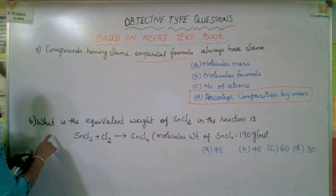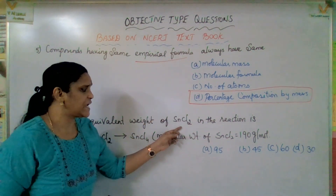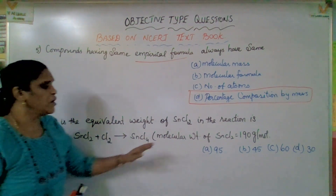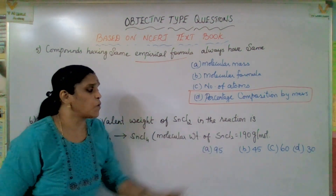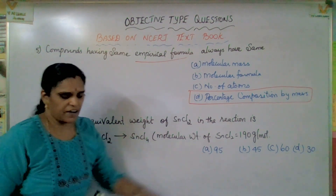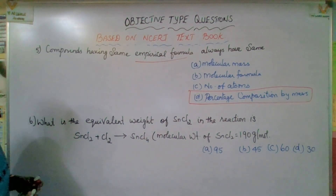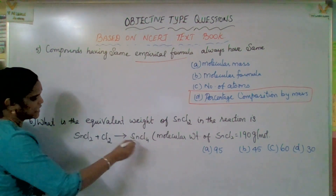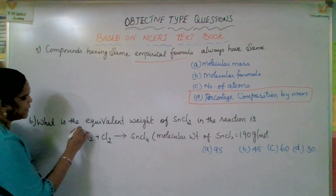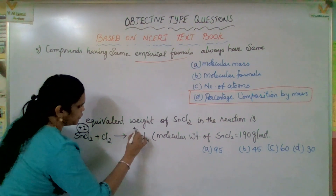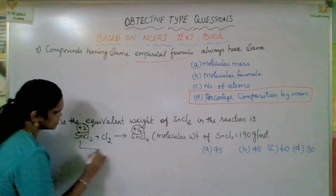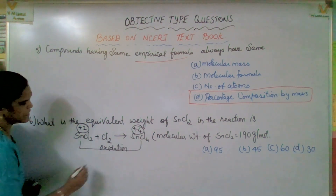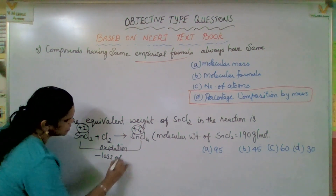Okay, the next question. What is the equivalent weight of SnCl2 in this reaction? SnCl2 plus Cl2 gives SnCl4. Molecular weight of SnCl2 is 190 gram per mole. First let us see the equation. In SnCl2 tin is plus 2, but in SnCl4 it is plus 4. So this is actually an oxidation reaction — loss of electron.